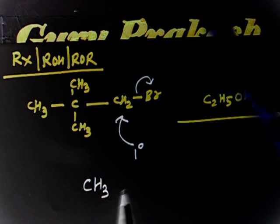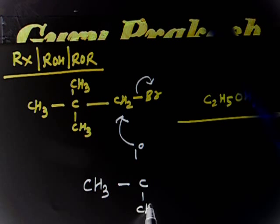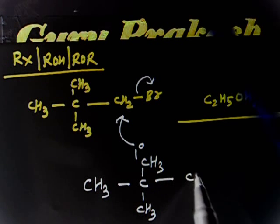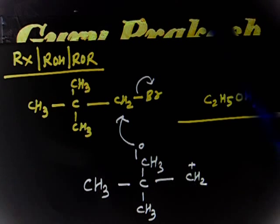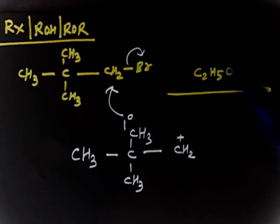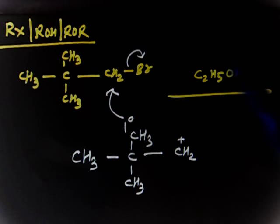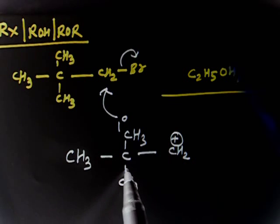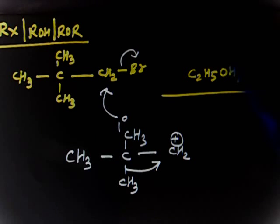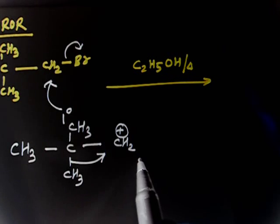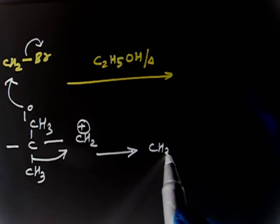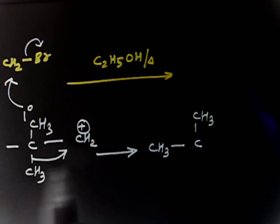That primary carbocation is not stable, so it rearranges. You have a primary carbocation (CH3C(CH3)CH2+), and because it is unstable, there is a rearrangement due to a methyl shift. After the methyl shift, you get a more stable carbocation.